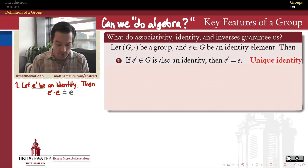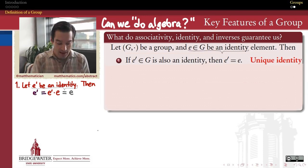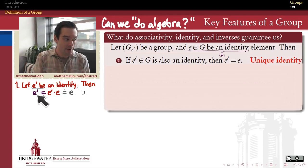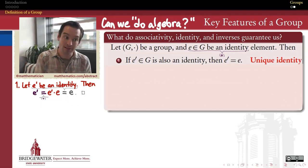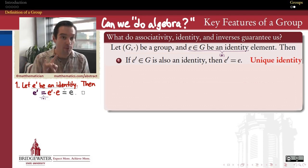But on the other hand, E is also an identity element, and so when E multiplies E prime, it doesn't change E prime either. And so this same expression, E prime multiplied by E, is on the one hand equal to E prime, and on the other hand is equal to E, so by the transitive property of equality, we conclude E prime is equal to E. Therefore, no group can have more than one different identity element.